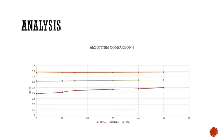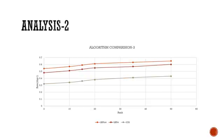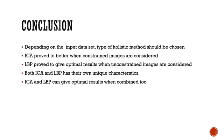Now let's look at the analysis. For unconstrained images, ICA is far better than LBP — ICA fits better than local binary pattern when the dataset has unconstrained images. Similarly, when we work with constrained images, LBP does far better than ICA, because LBP is a texture recognition algorithm and no texture is constrained. That's a good finding from this project. The conclusion is that ICA can do better with unconstrained images and LBP can do better with constrained images. Future work should aim to use both and find optimal results, since we cannot expect our input dataset to be constrained all the time.